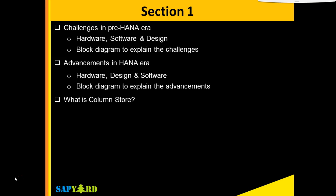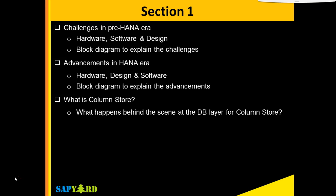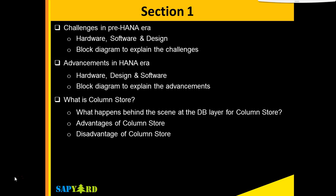Then we will understand what is column store and what happens behind the scene at the database level for column store. You will also get to know what are the advantages of column store. Column store not only has advantages but there are certain limitations as well, and we will reveal those limitations too.